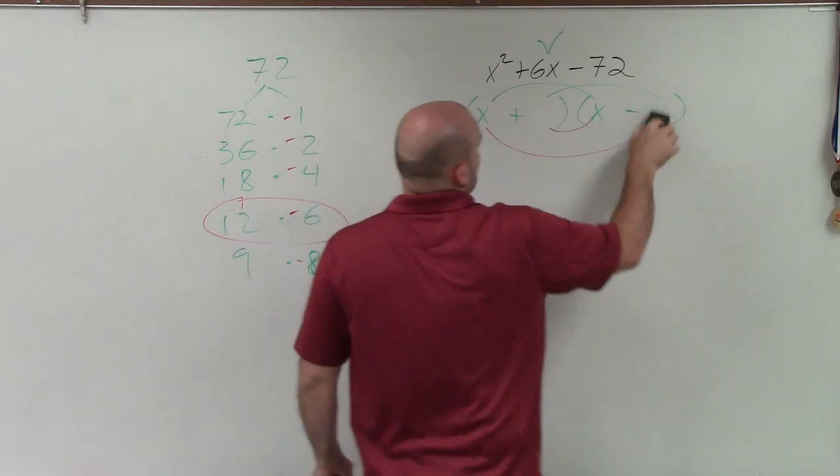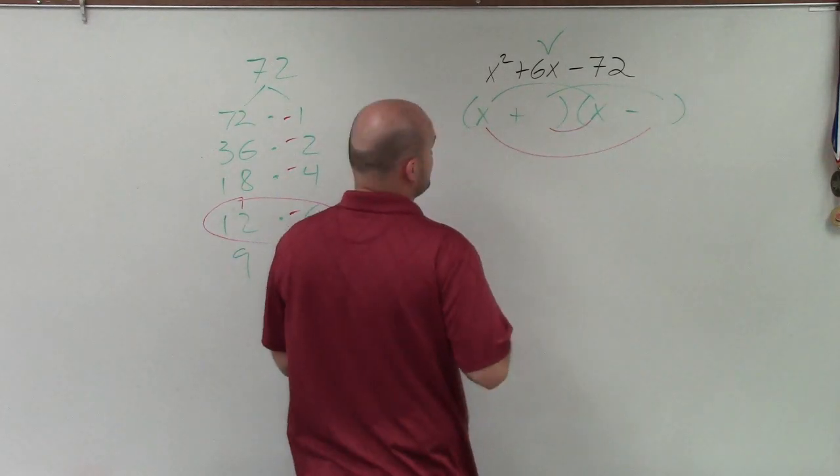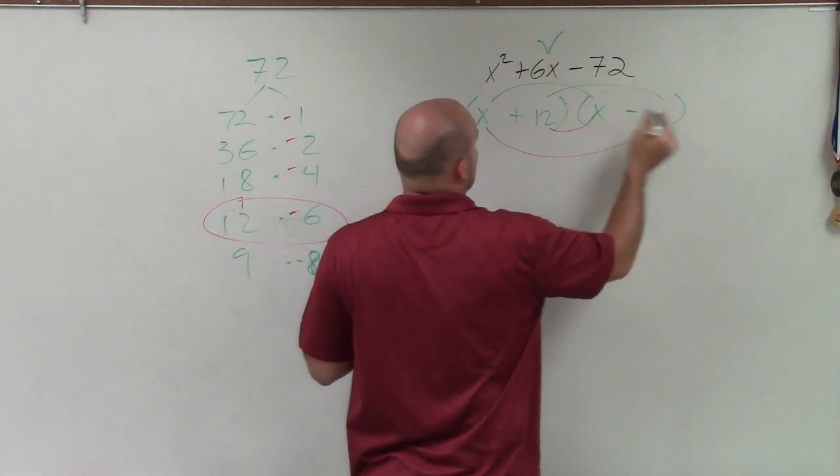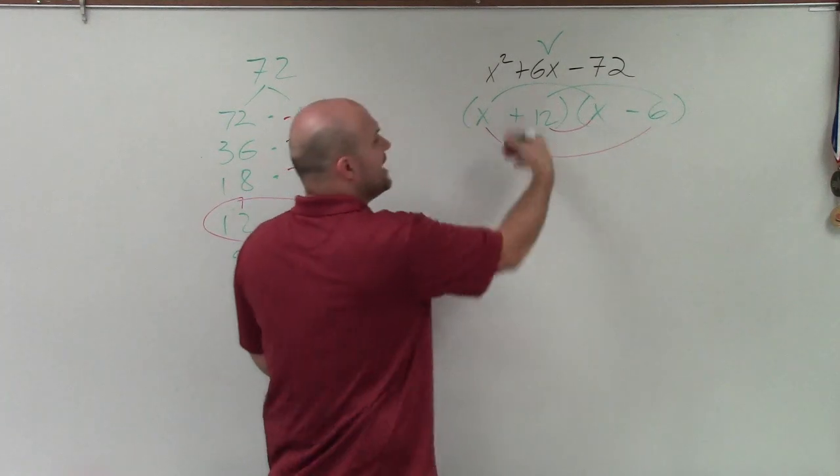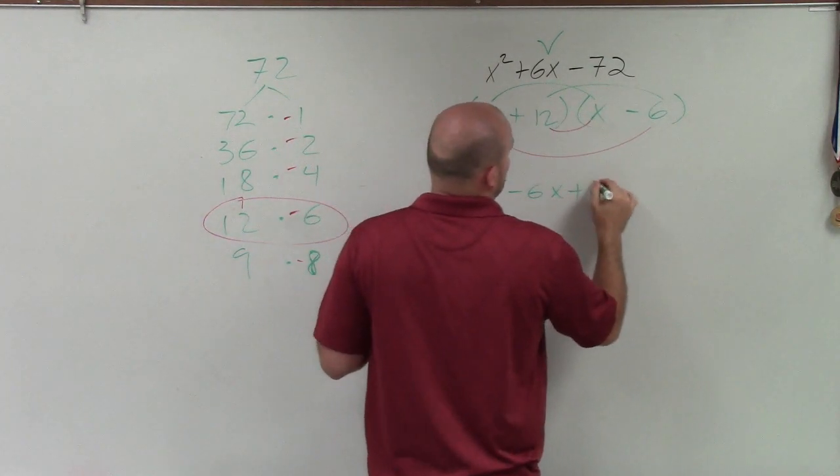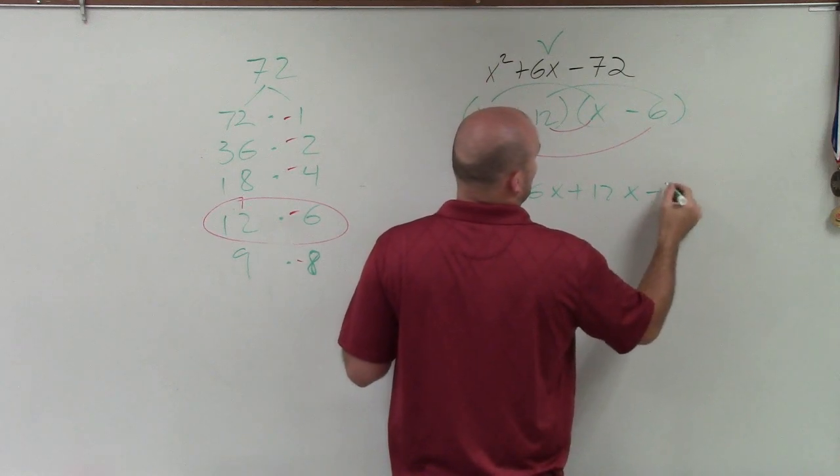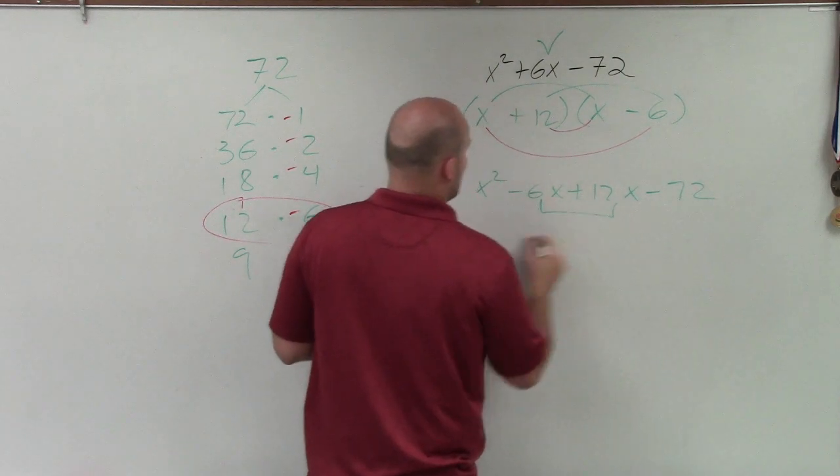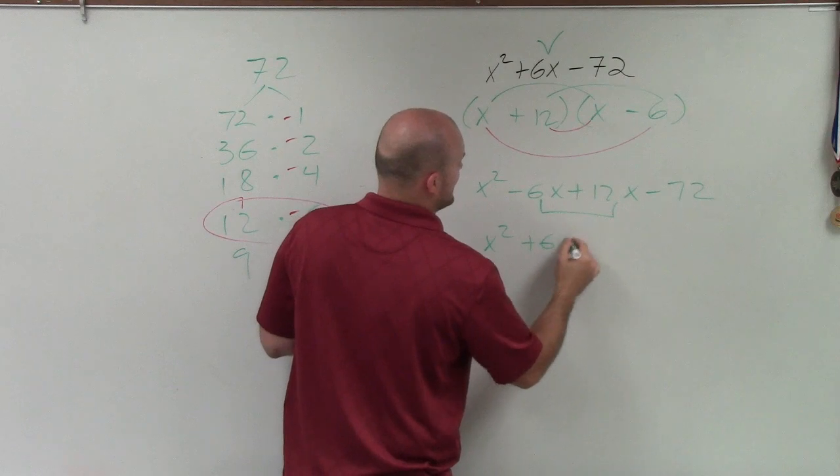So now, I'll just go and write them in there. x plus 12, x minus 6. Now, when I apply distributive property, I have x squared minus 6x plus 12x minus 72. These obviously combine to a positive 6x.